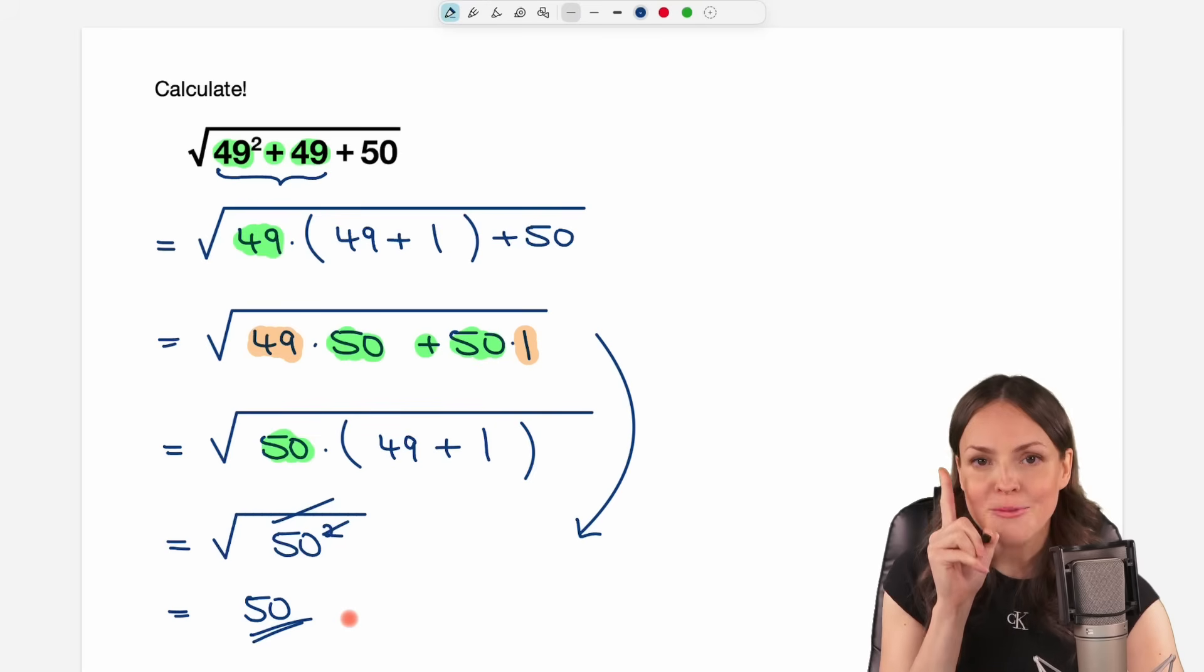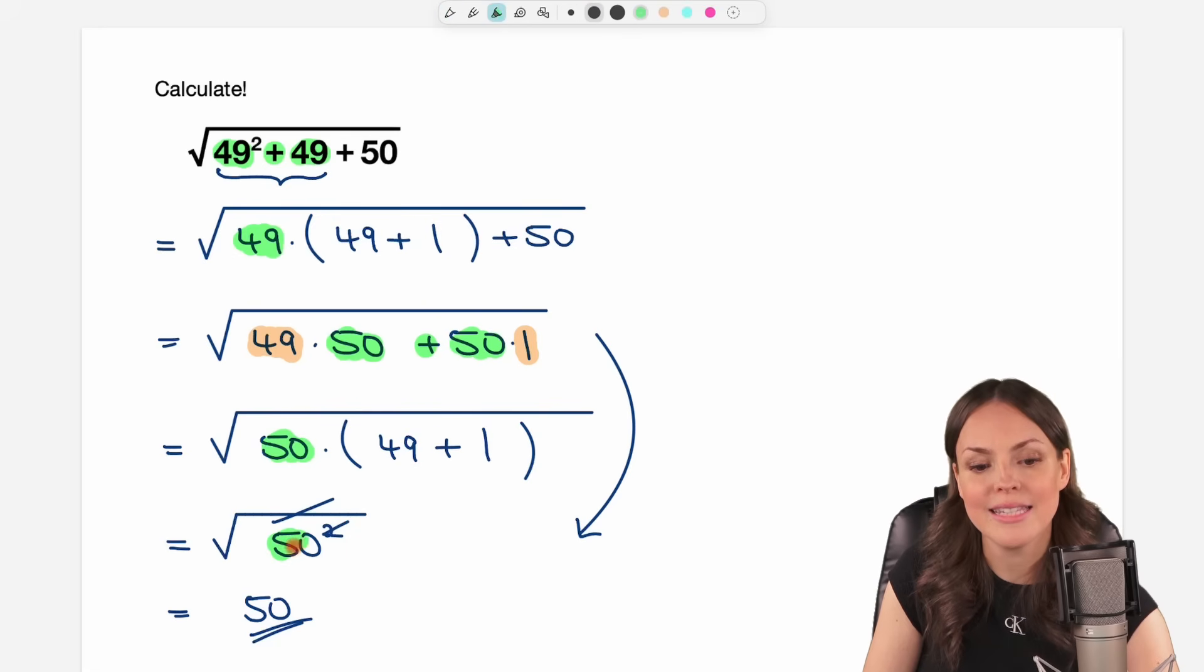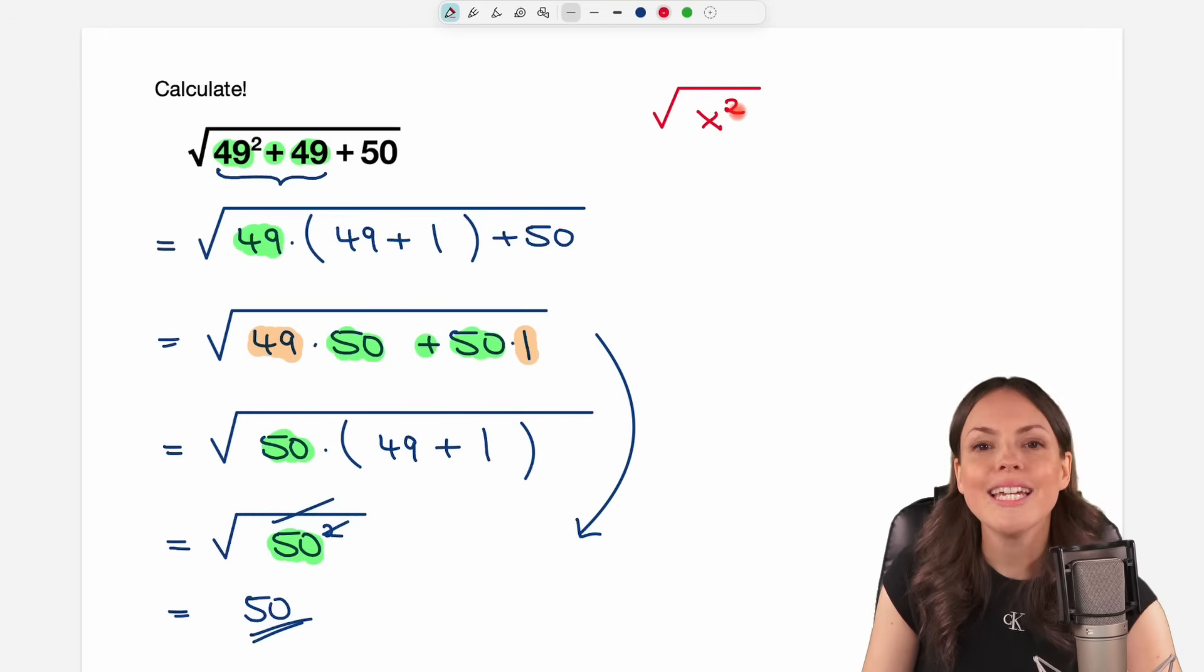But it's really important that this canceling out is only possible because this is a positive number. This could go wrong. So in general, if you have the square root of a number squared, so x squared, you cannot just cancel the square root and the square and say the result is going to be my x. This is not correct. What would be correct is to say the result is the absolute value of this number, the absolute value of x. This is correct.